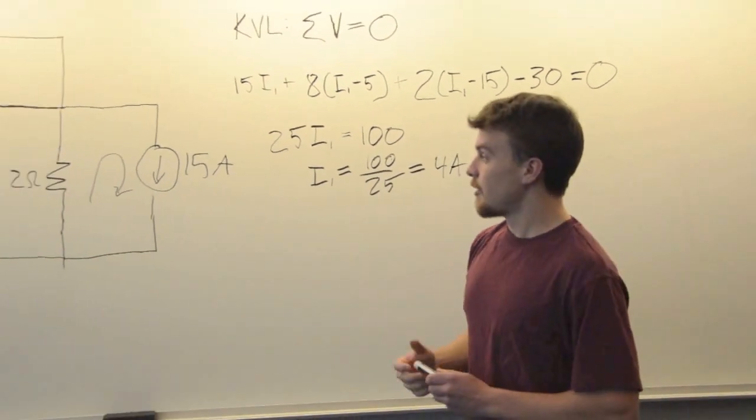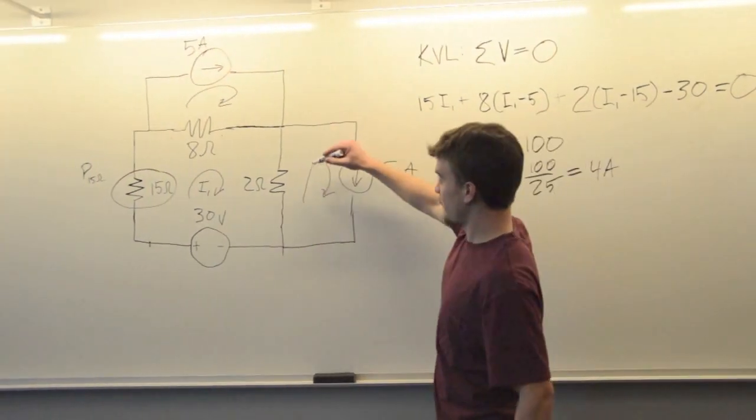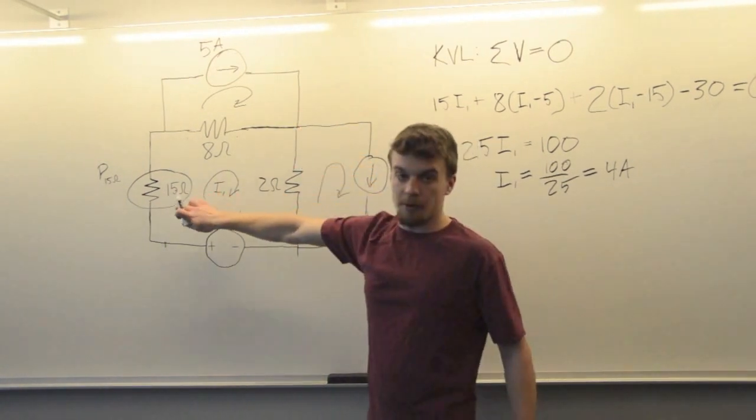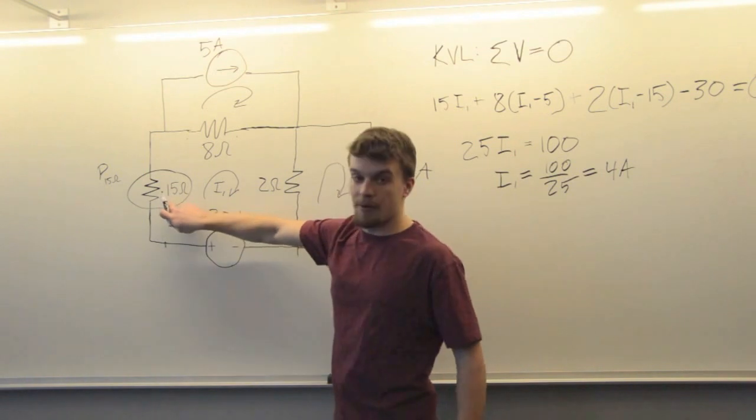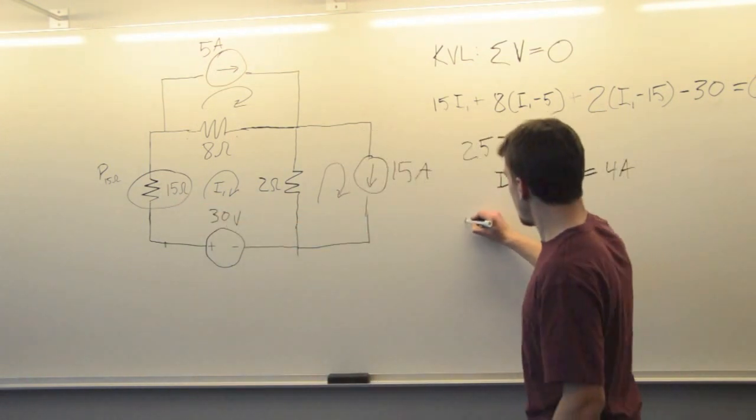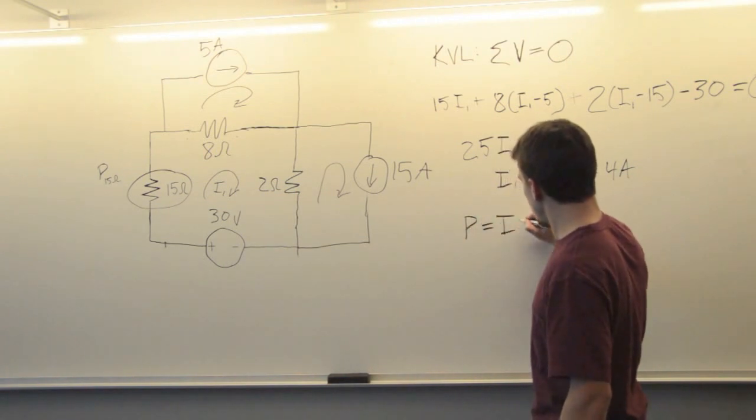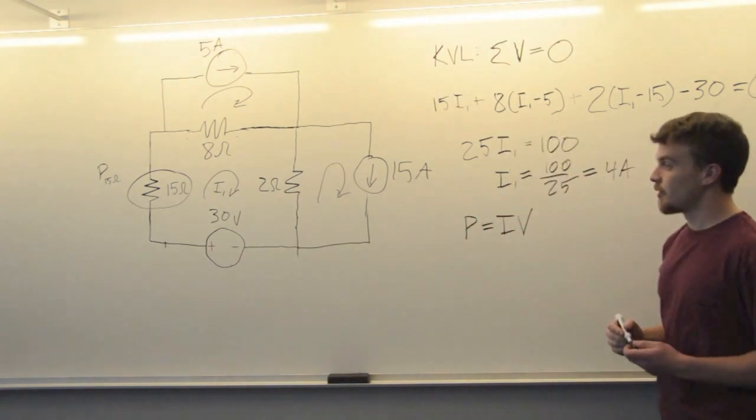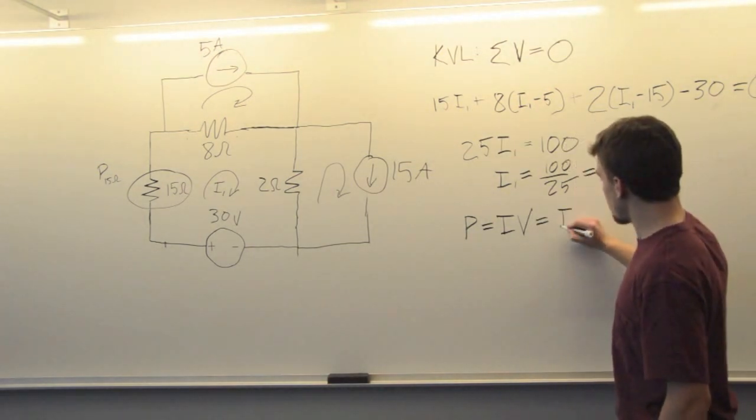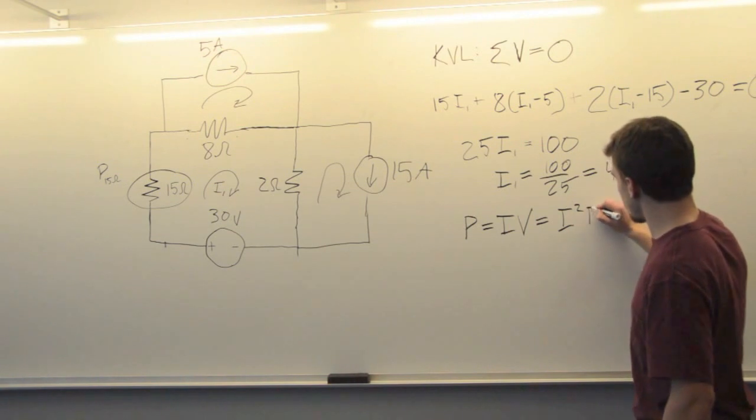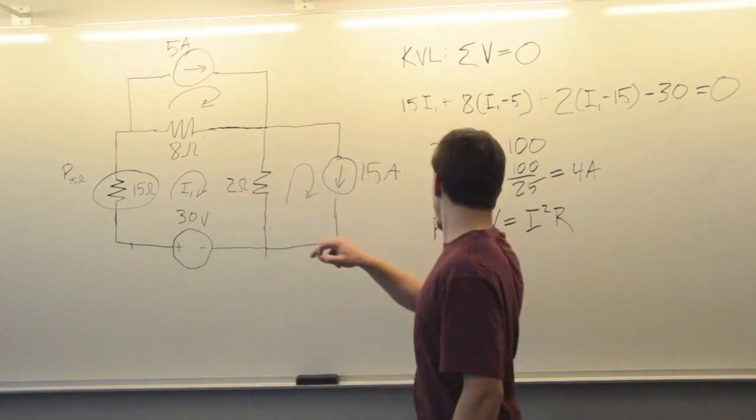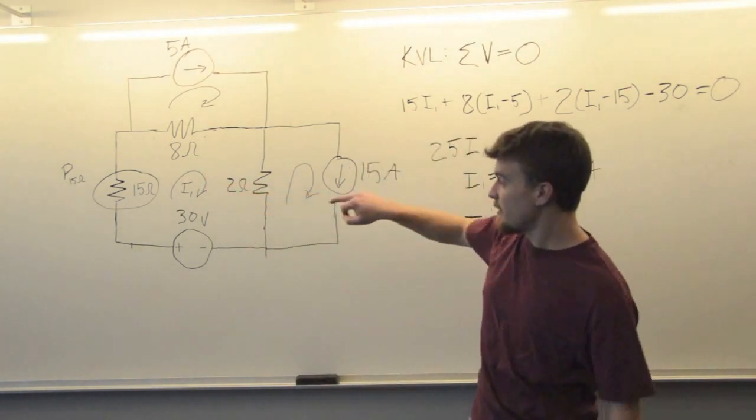Now we know the value of every loop current. When we're looking for the power absorbed by this resistor, we know power is equal to current times voltage, and power is also equal to current squared times resistance. Since we know the value of this loop current, it's 4 amps flowing around. That's the current going through this resistor.